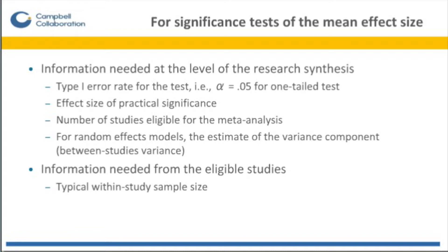At the level of the research synthesis, we need to know the type 1 error rate you want to use for your test of the mean effect size — for example, alpha .05 for a one-tail test. You also need to know the effect size of practical or clinical significance that will be important in your systematic review. We need to know the number of studies that we expect will be eligible for the meta-analysis. And if you're using a random effects model, we need the estimate of the variance component — in other words, the between-studies variance.